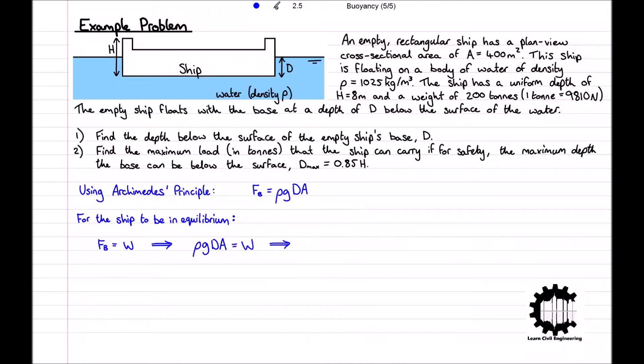Rearranging for d, we get d = w/(ρgA). Substituting in our values stated in the question, d = (200 × 9810) / (1025 × 9.81 × 400), which equals 0.488. Therefore, the base of the empty ship is at a depth of 0.5 meters below the surface.